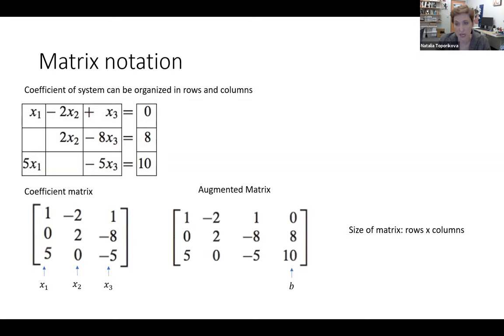Generally, when we're talking about a matrix, we refer to the matrix size as number of rows and columns. For example, for our coefficient matrix we have three rows and three columns, or we call it a three by three matrix. For our augmented matrix, we actually have four columns and three rows, so we're referring to a three by four matrix. Generally, rows come first, columns come second.